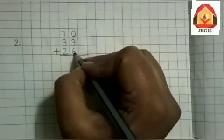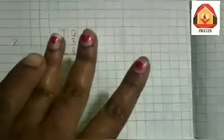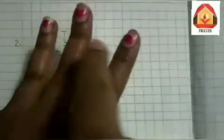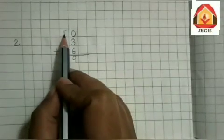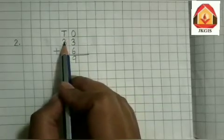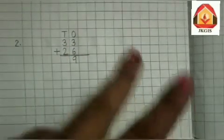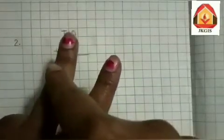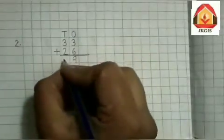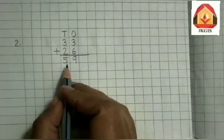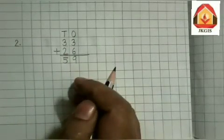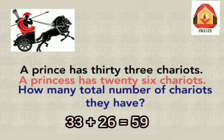Let us keep 6 in our mind and 3 on our fingers: 6 plus 3 — 7, 8, 9. So 3 plus 6 is equal to 9. Now we will add the numbers on 10's place: 3 plus 2. Keep 3 in our mind and 2 on our fingers: 3, 4, 5. That means 3 plus 2 is equal to 5. So here the total number of chariots are 59. Total number of chariots are 59.